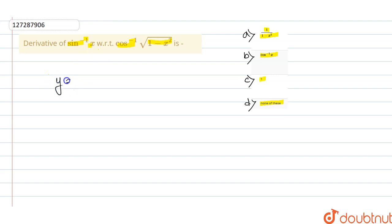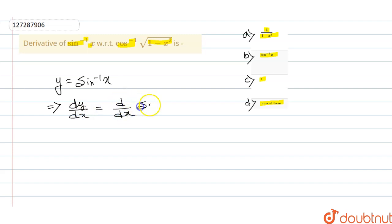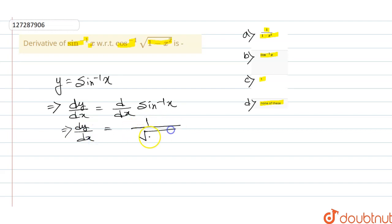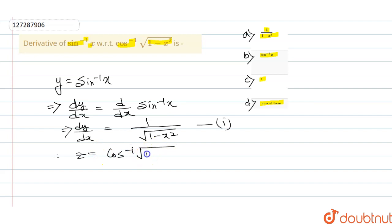So first, let us take y equal to sin inverse of x. And we want to find the derivative with respect to x, so dy/dx equals d/dx of sin inverse x. Now let z equal to cos inverse of under root of 1 minus x squared.